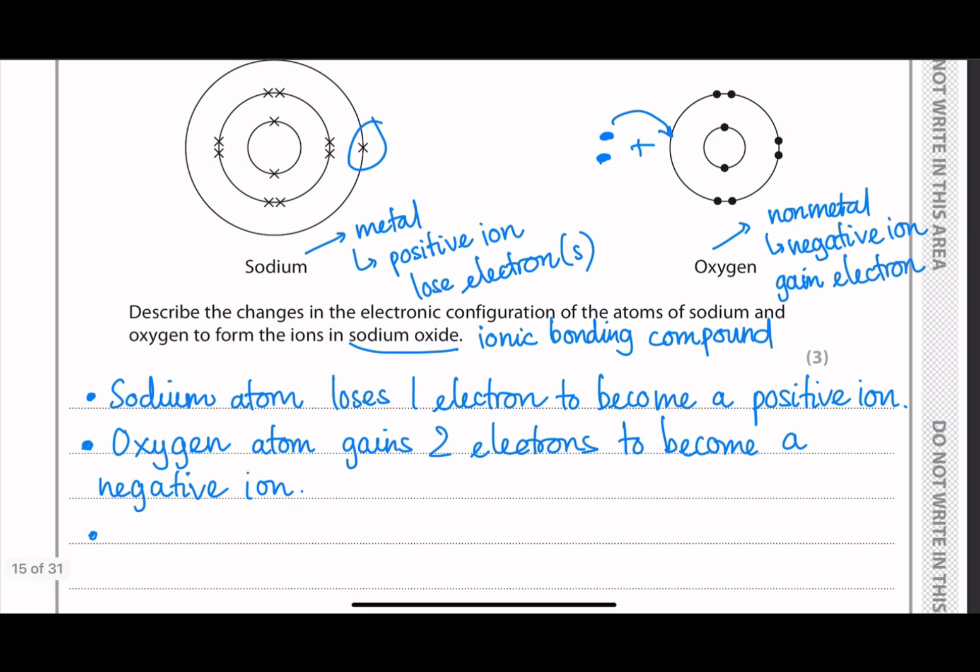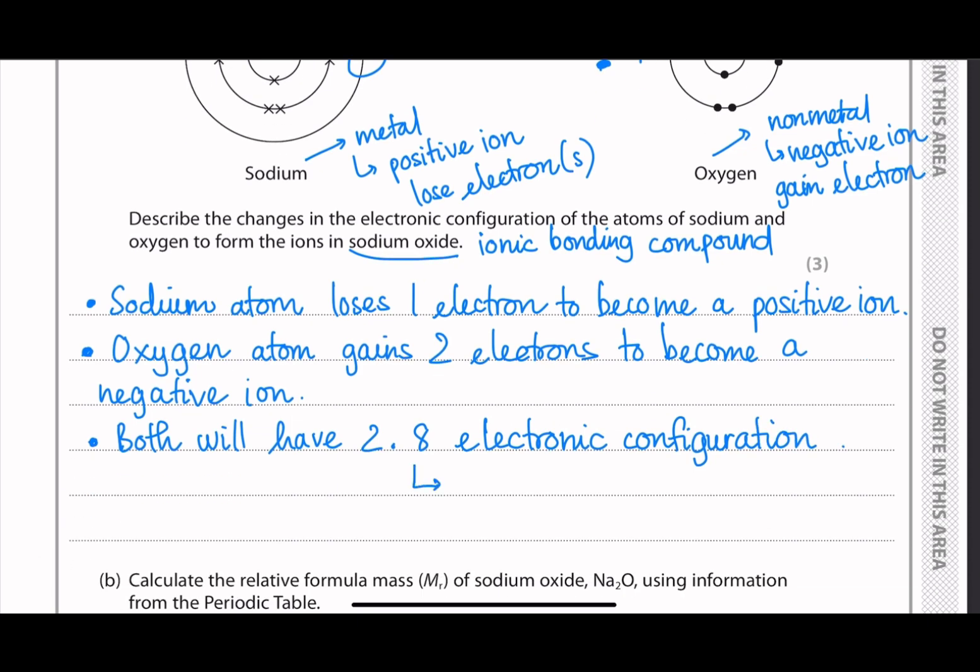And one more observation about the electronic configuration of the two ions is that both will have a 2-8 electronic configuration. So that means the first electron shell has two, the second electron shell has eight electrons. So the two ions are called isoelectronic, which means they have the same electronic configuration.